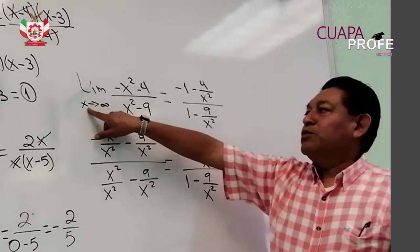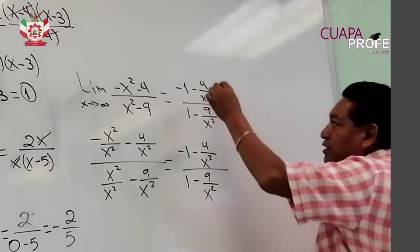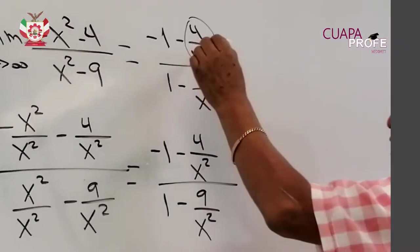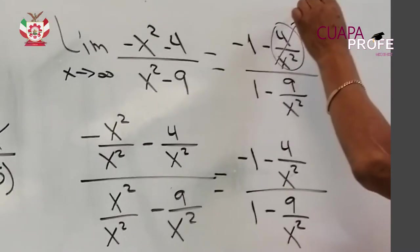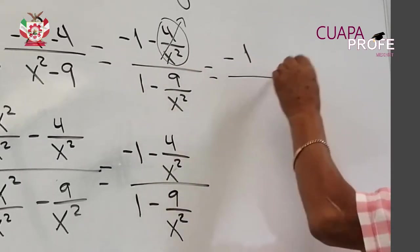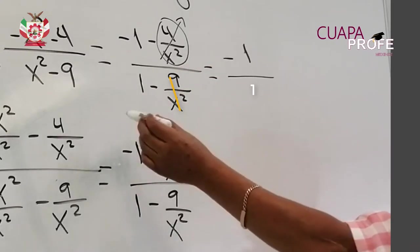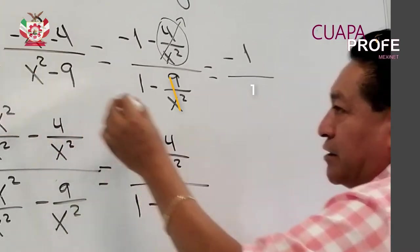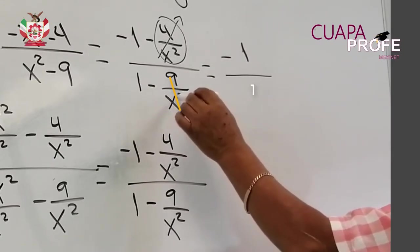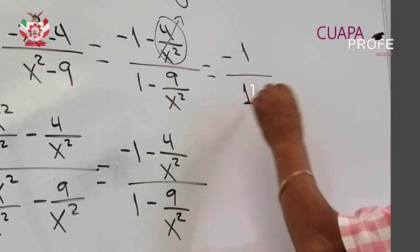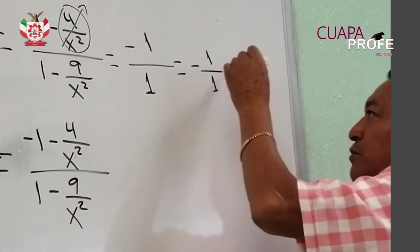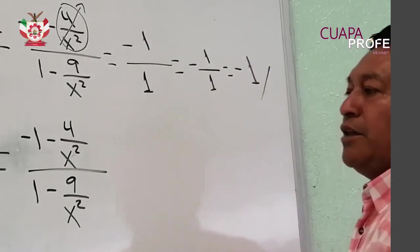Aplicamos el límite, es decir, vemos qué sucede cuando x tiende a infinito, y podemos observar que este número, 4 sobre un número mucho pero mucho muy grande, al ir creciendo nuestra variable x, este cociente va a tender a 0. Por lo tanto, en el numerador, me queda menos 1. Y en el denominador, sucede algo similar. Esta expresión, este cociente, al ir creciendo nuestra variable x, cada vez más hacia infinito, nos dará 9 entre un número mucho muy grande, que al final tiende también a 0. Entonces, me quedaría únicamente la unidad. Por lo tanto, mi límite sería menos 1 entre 1, y esto es igual a menos 1, y este sería el límite de mi función.